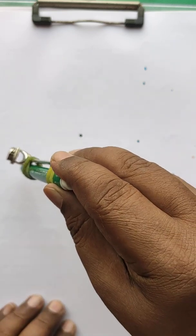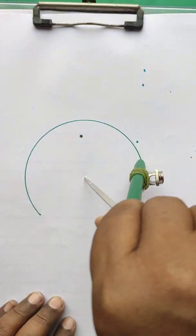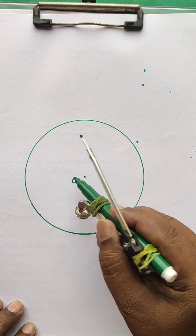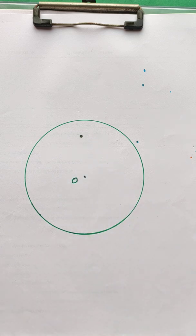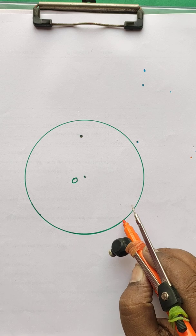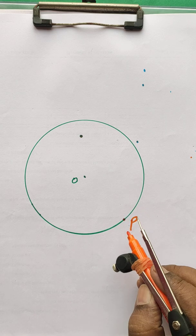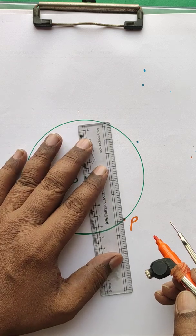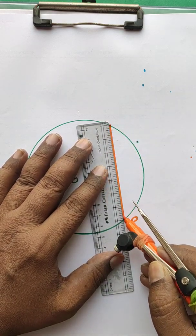Let us learn how to draw a tangent to a given circle without using the center. We will draw a circle with the given radius. The center point is O. Let us take a point P — I need to draw a tangent at point P without using the center. To do this, I will draw a triangle.